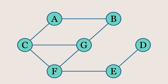Another important concept is the degree of a node. The degree of a node refers to the number of edges connected to it. In an undirected graph, this is straightforward — the degree of a node is simply the number of edges connected to it. For example, the degree of node G is 3, because it has three edges connected to it.